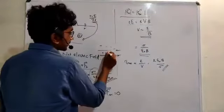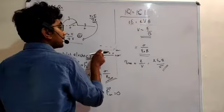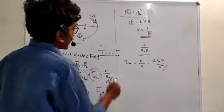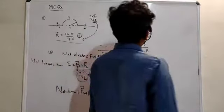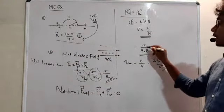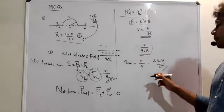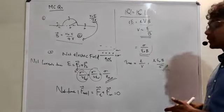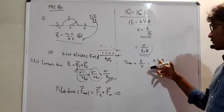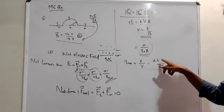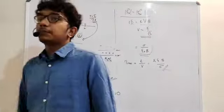We don't need to consider the sine of the angle because the magnetic field is directed into the page and the velocity is perpendicular to it. Since E = vB, we get v = E/B. Substituting E = sigma/ε₀, we get v = sigma/(ε₀B). The time to cross the capacitor is t = L/v, which gives t = Lε₀B/sigma. If the medium is not free space, use ε instead of ε₀.